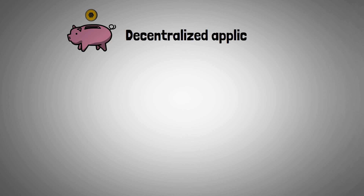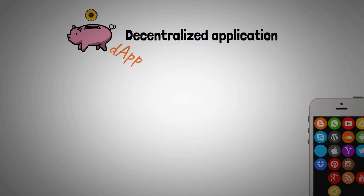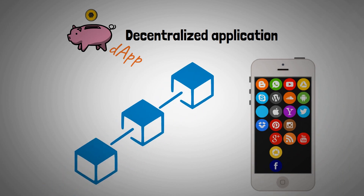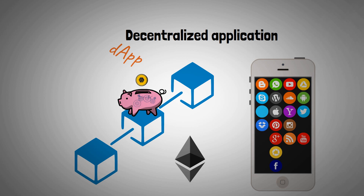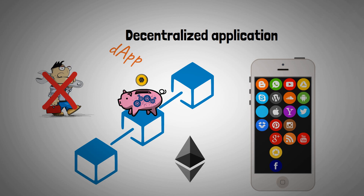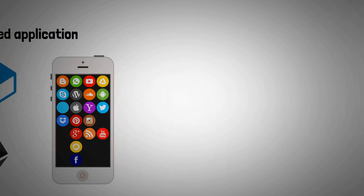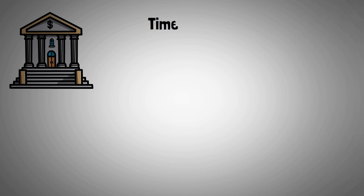HEX is an application built on such a blockchain. It's a decentralized application, or DAP. It's like any other regular app built on the blockchain, and in the case of HEX, on the Ethereum blockchain. It runs completely automated and independently, so there's no need for anyone to oversee or manage what's happening. You could easily compare the HEX DAP to a bank where you'd have a time deposit, a term account.